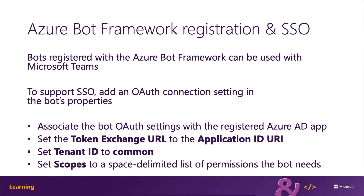To associate the Azure AD app with the Microsoft Teams app, you use the manifest JSON file — specifically the webApplicationInfo object inside the Teams app manifest package. Two parts need to be updated: the ID, which is the ID of your Azure AD application (the same as used in a tab experience), and the resource property, which is the URI of the app — the same URI used when registering the app in Azure AD. It follows the token exchange URL format: api://botid-{GUID of the app}.